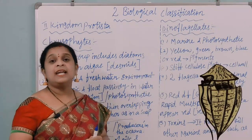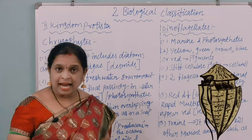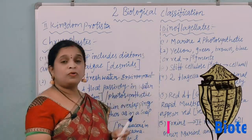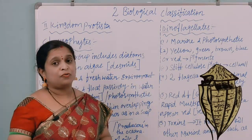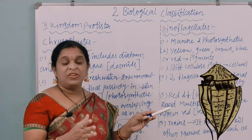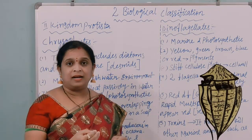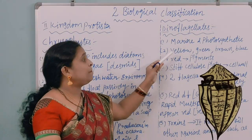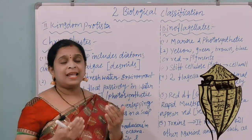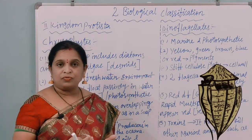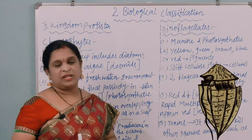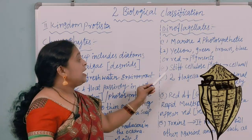The second category is dinoflagellates. Members of dinoflagellates are marine and photosynthetic. The pigments present in dinoflagellates are different — they impart not only green color but also yellow, brown, blue, and red, due to the presence of pigments like xanthophylls, rhodophylls, and phycobilins, which are responsible for the pigmentation of the organism.